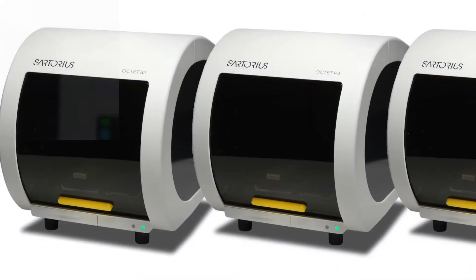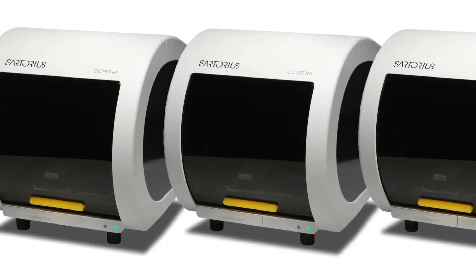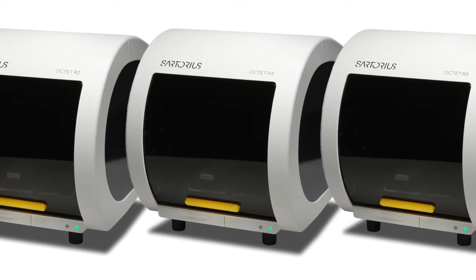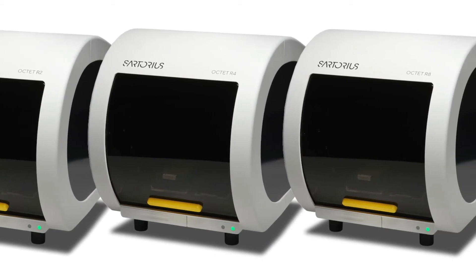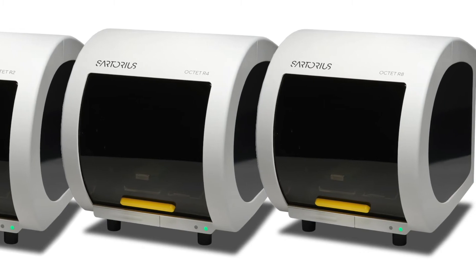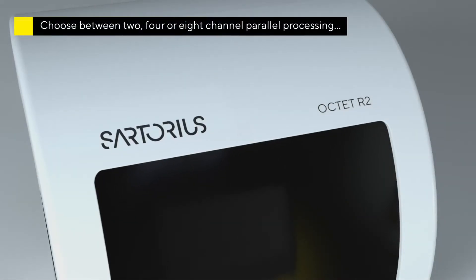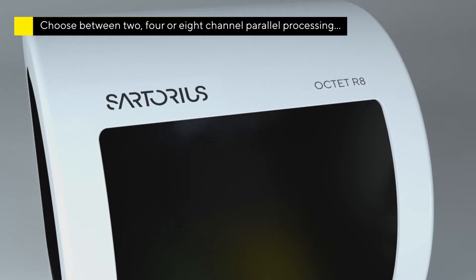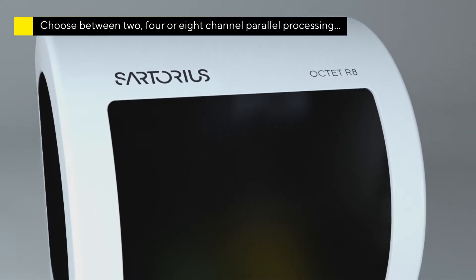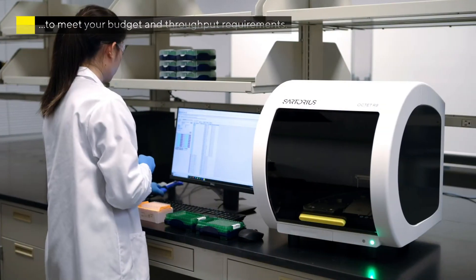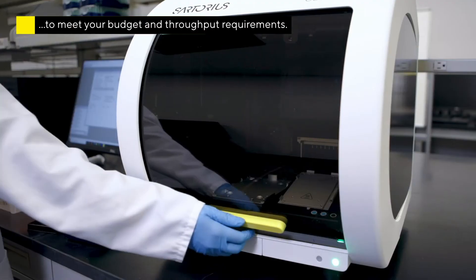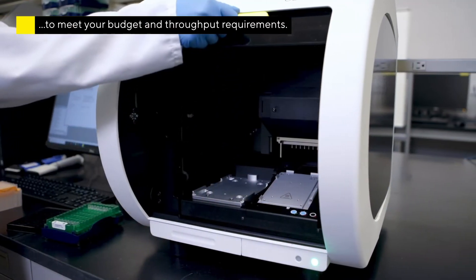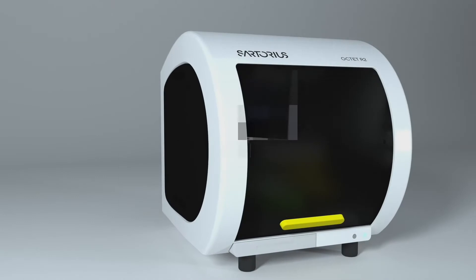Sartorius' latest offering, the Octet-R series, provides a modular and scalable solution for molecular screening in 96-well microplates. Offering a choice of two-, four-, or eight-channel parallel processing, these instruments are designed to provide fully automated walk-away processing to meet every lab's budget and throughput requirements.